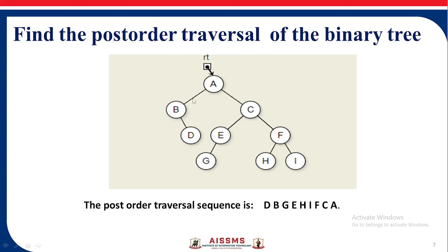Now find the post-order traversal of the binary tree. First we traverse the left subtree using left-right-root, then the right subtree using left-right-root. We get D, B, then G, E, H, I, F, C, A. So the post-order traversal sequence is D, B, G, E, H, I, F, C, A.